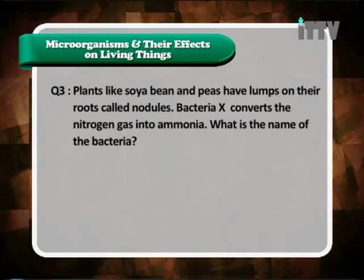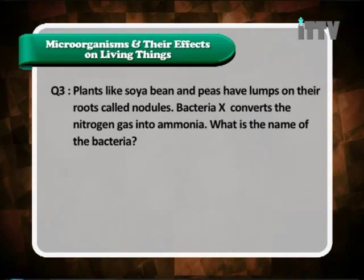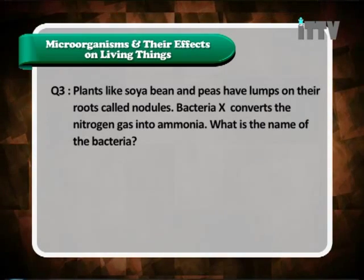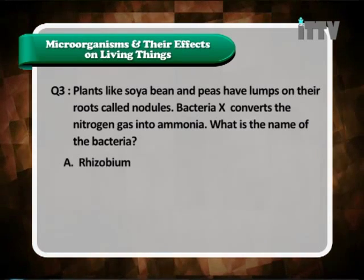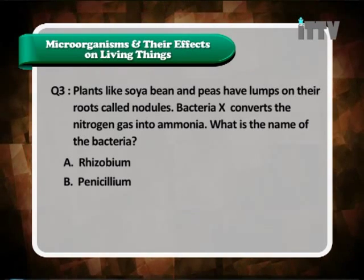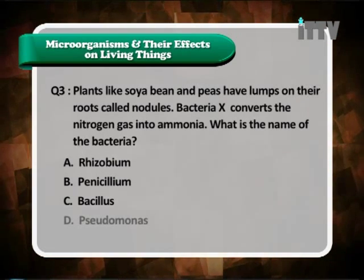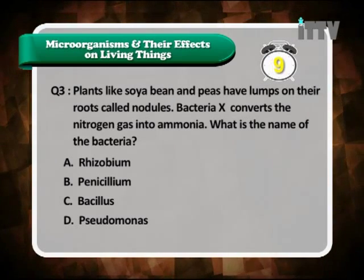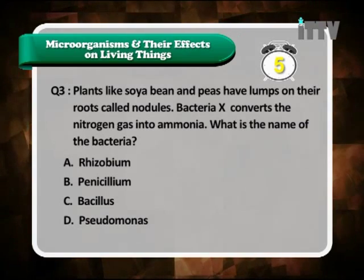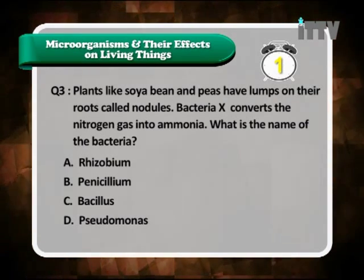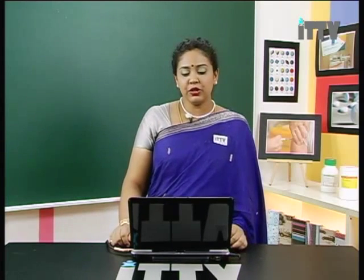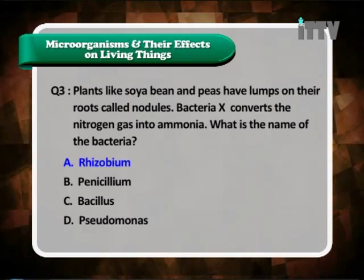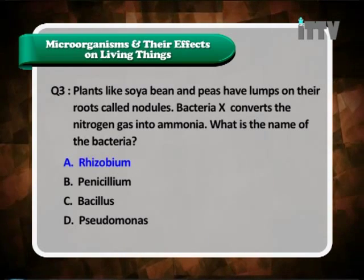Question 3: Plants like soya bean and peas have lumps on their roots called nodules. Bacteria X converts the nitrogen gas into ammonia. What is the name of the bacteria? A. Rhizobium, B. Penicillium, C. Bacillus, D. Pseudomonas. The bacteria we learned about in the nitrogen cycle that is present in the nodules starts with R — it is Rhizobium. So the answer is A, Rhizobium.